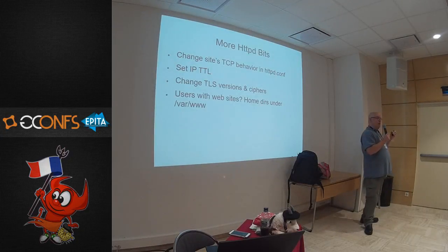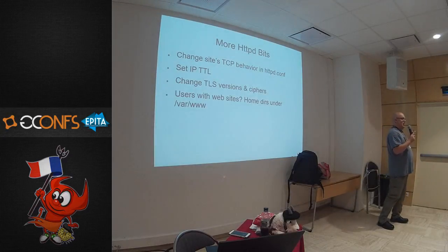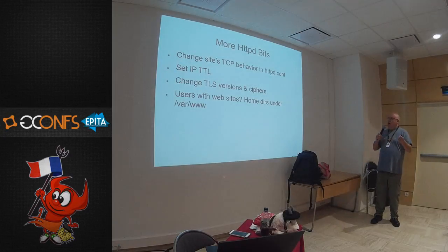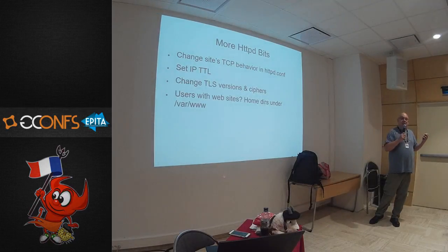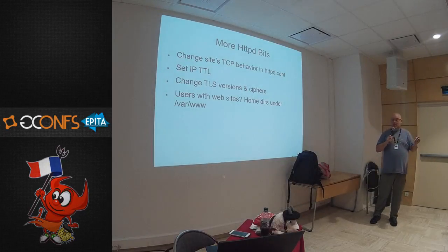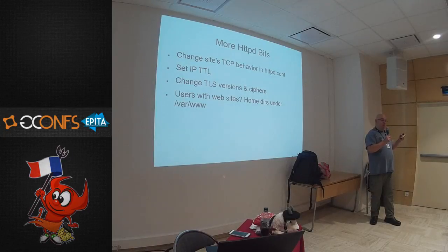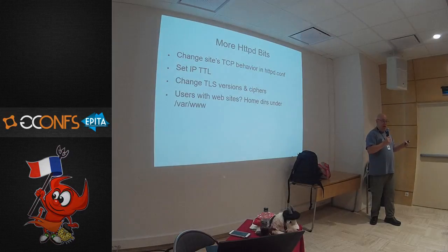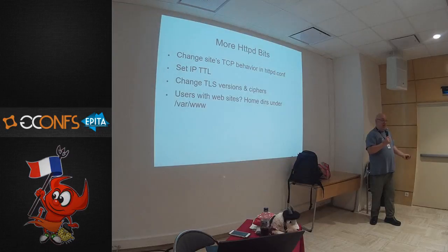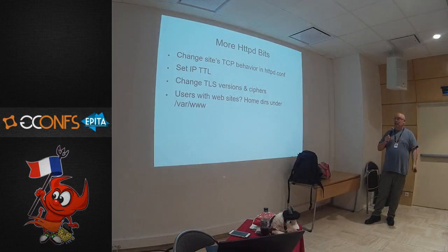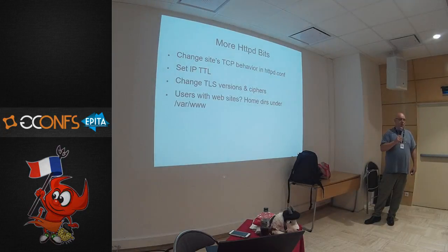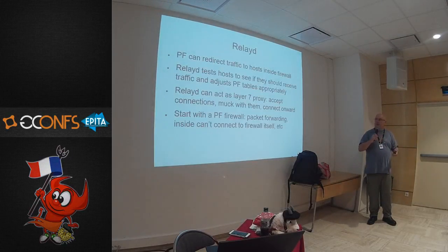Some things you can do — you shouldn't necessarily, but the internet is stupid and sometimes you have to. You can affect the TCP behavior of the web server in httpd.conf. You can set a time-to-live on your web server packets: if you don't want the website accessible outside the company, even if the firewall team screws up, put a TTL of 2 on your packets and they can't leave. You can change TLS versions and ciphers — don't do that; the ciphers and versions were chosen by people smarter than you. If you have users with their own websites, put their home directories inside the chroot.